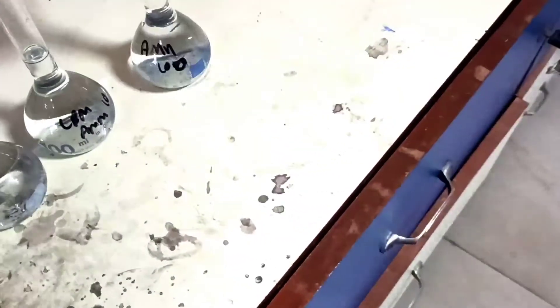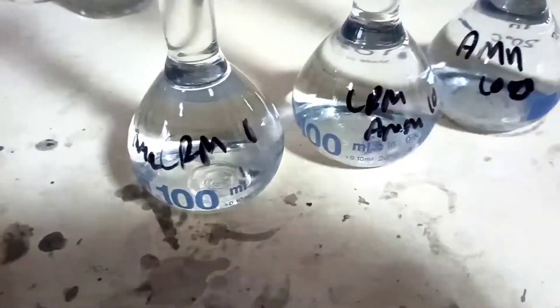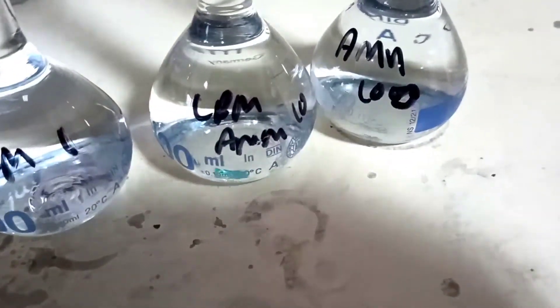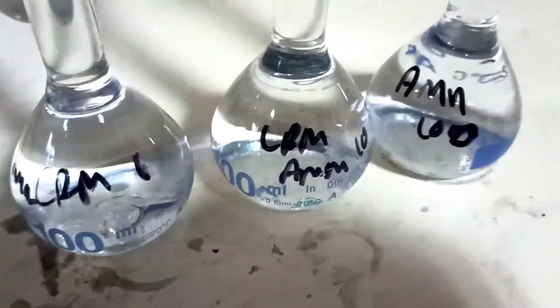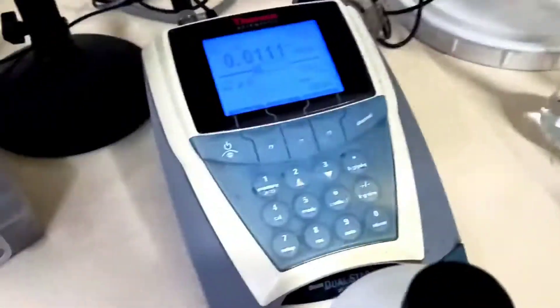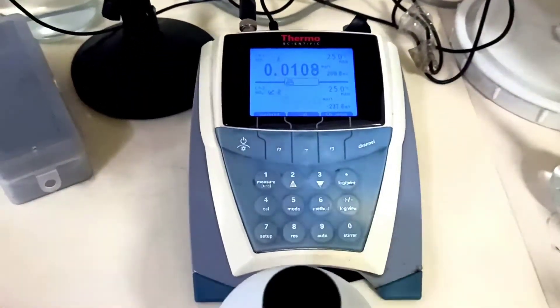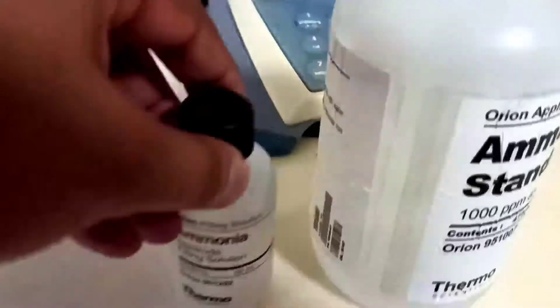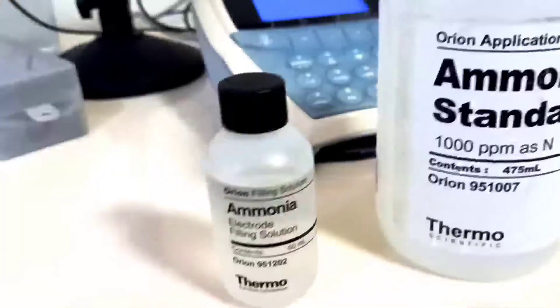We prepared three standards: 100 ppm, second is 10 ppm, and last one is 1 ppm. By using the N1V1 equals N2V2 formula, we prepared these three standards. The thousand ppm is our primary standard, also called the certified reference material, and it is approved by NIST.